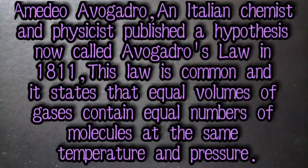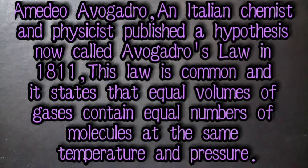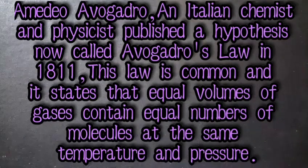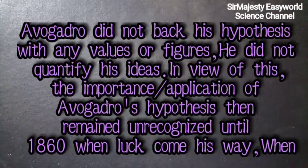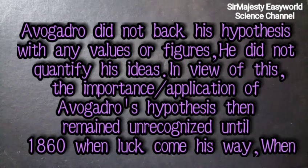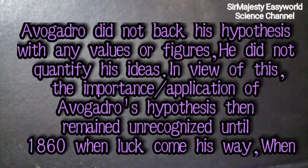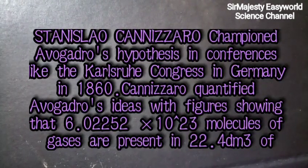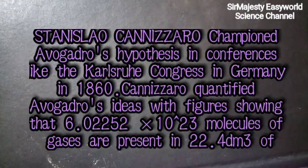Amedeo Avogadro, an Italian chemist and physicist, published a hypothesis now called Avogadro's law in 1811. This law states that equal volumes of all gases contain equal numbers of molecules at the same temperature and pressure. Avogadro did not back up his hypothesis with any values or figures. That is, he did not quantify his ideas. In view of this, the importance or the application of Avogadro's hypothesis then remained unrecognized until 1860, when luck come his way. When Stanislao Cannizzaro championed Avogadro's hypothesis in conferences like the Karlsruhe Congress in Germany in 1860.